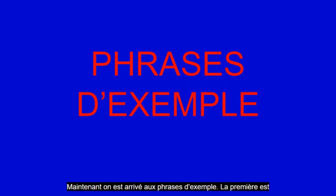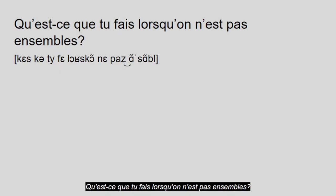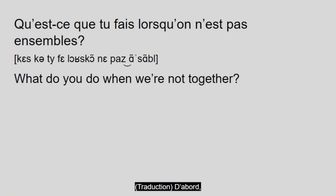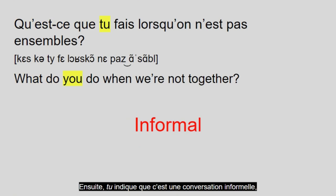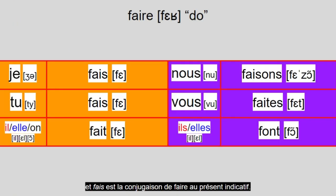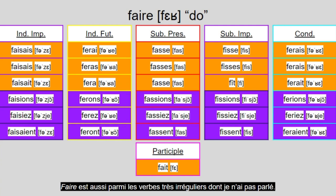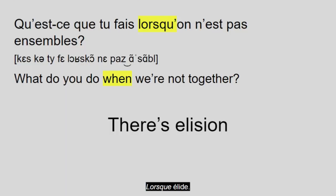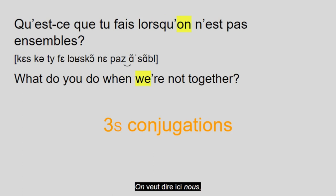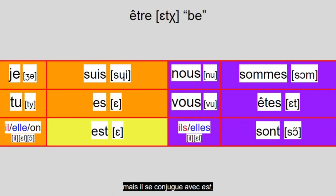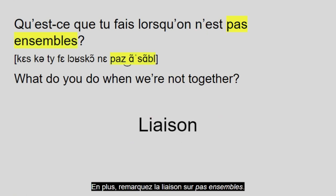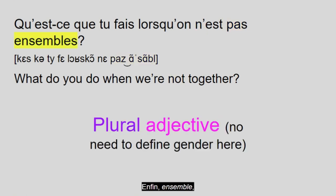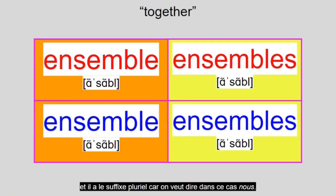Now I've reached the example sentences. The first one is qu'est-ce que tu fais lorsqu'on n'est pas ensemble? — What do you do when we're not together? First there's qu'est-ce que, the overcomplicated interrogative particle. Then tu indicates that this is an informal conversation, and fait is the conjugation of faire in the indicative present. Lorsque means 'when,' and it elides. On in this case means 'we,' but it's conjugated with est, and n'est pas is how you negate that clause. Notice the liaison in n'est pas ensemble. Finally, ensemble means 'together,' and it has the plural suffix due to on meaning 'we' in this instance.